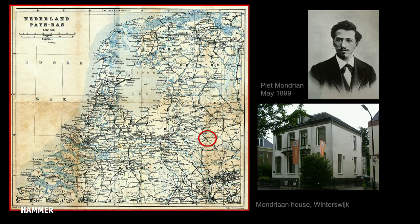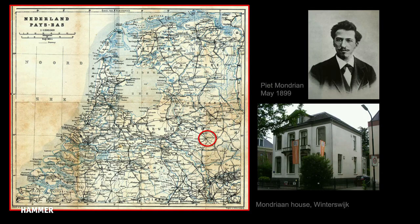Mondrian was born in 1872 and grew up in Winterswijk, that small Dutch town near the German border, in the so-called back corner of Gelderland — a hundred miles east of Amsterdam and a world apart. His father was a strict Calvinist schoolmaster whose hobby was drawing. When he saw that his son had talent and wanted to become an artist, he went along with that, but a bit grudgingly at times.